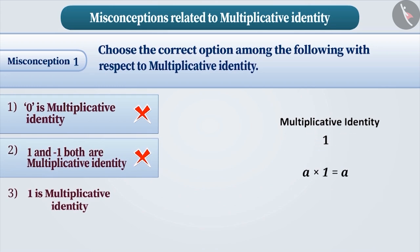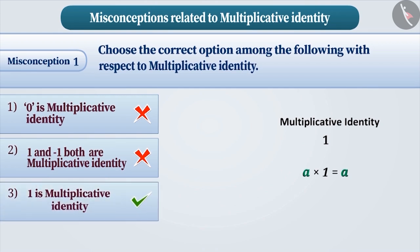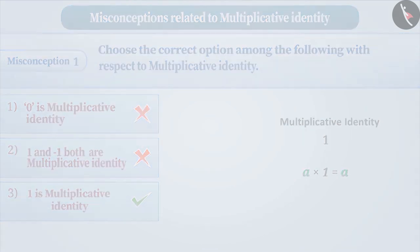The correct understanding is that when any integer is multiplied with 1, the result is the same integer. Therefore, 1 is the multiplicative identity of integers. Thus, option 3 is the correct answer.